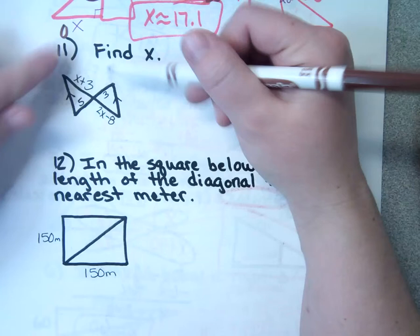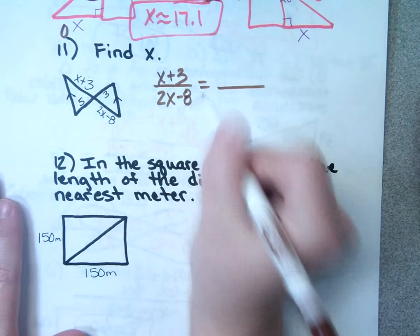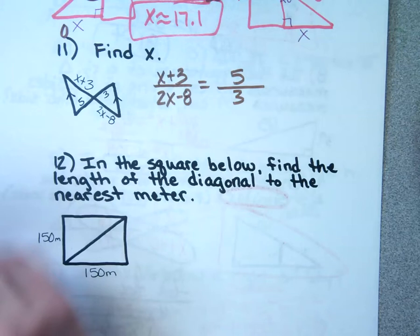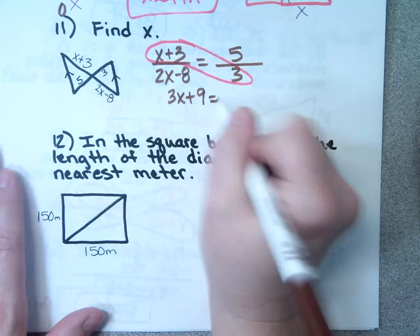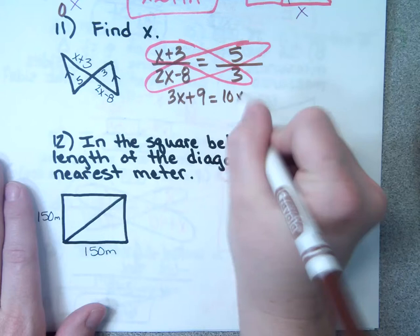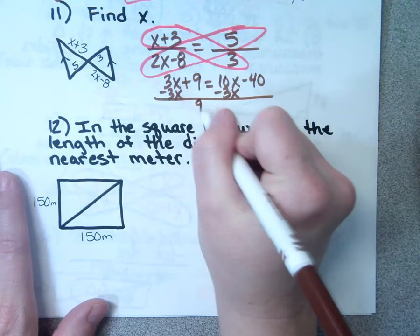The proportion is (X + 3) over (2X − 8) equals 5 over 3. Cross multiply and distribute: 3(X + 3) gives 3X + 9, and 5(2X − 8) gives 10X − 40. Subtract 3X from both sides: 9 = 7X − 40. Add 40: 7X = 49. Divide: X = 7.